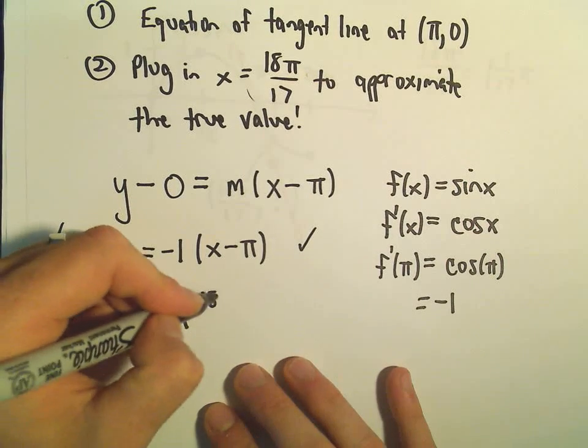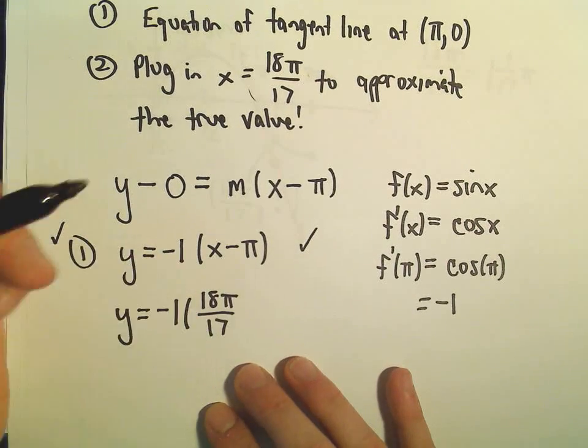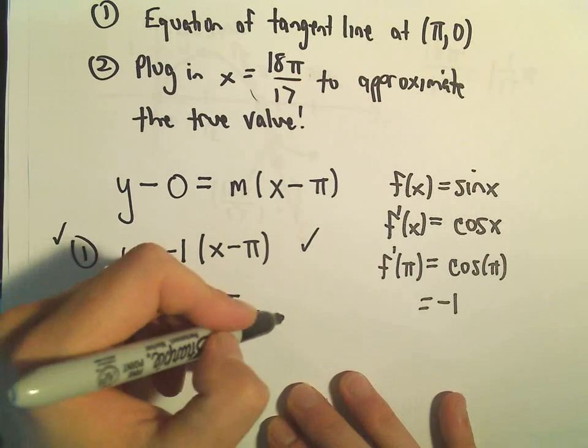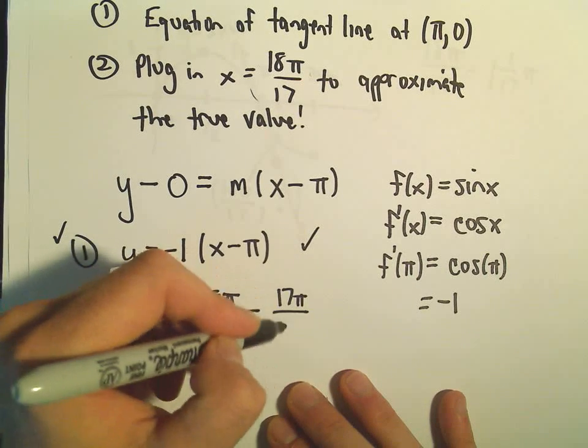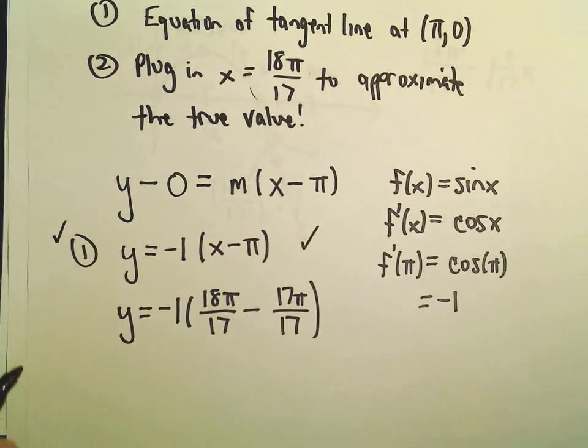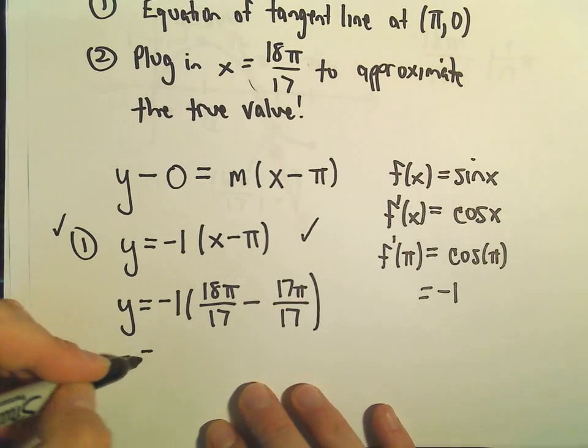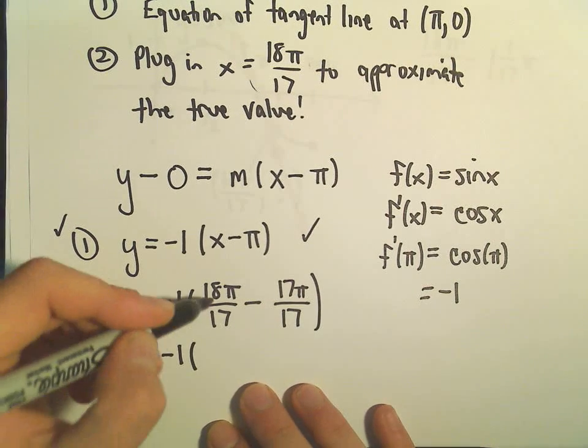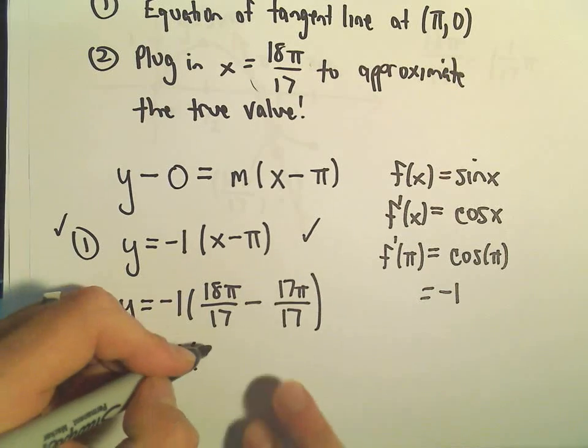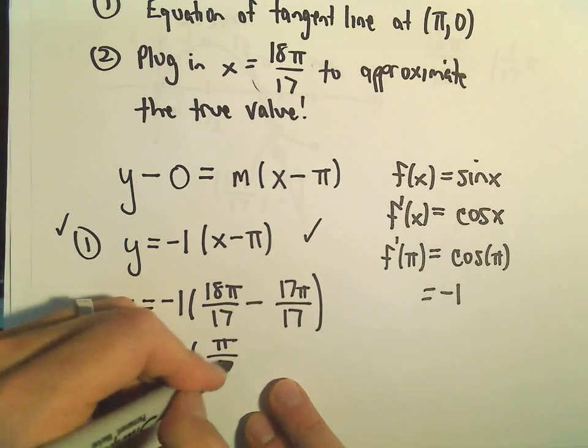So the approximation will be, I'm just plugging in 18π over 17 and I'm subtracting π. And we can write that as 17π over 17 if we want to get common denominators. So we'll have negative 1 times, let's see, 18π minus 17π is just 1π over 17.